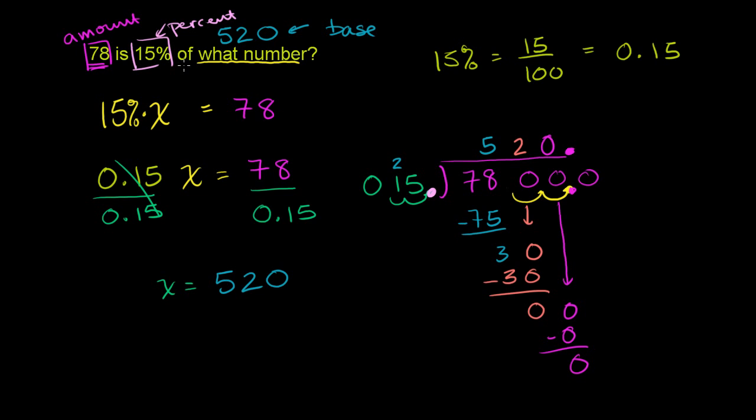But the important thing is to be able to just answer this question. And it makes sense. Because 15% is a very small fraction. So 78 is a small percentage. If 78 is a small percentage of some number, that means that number has to be pretty big. Has to be pretty big. And our answer gels with that. This looks about right. 78 is about 15%, or it is exactly 15% of 520.